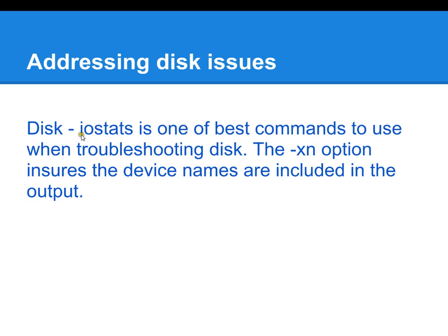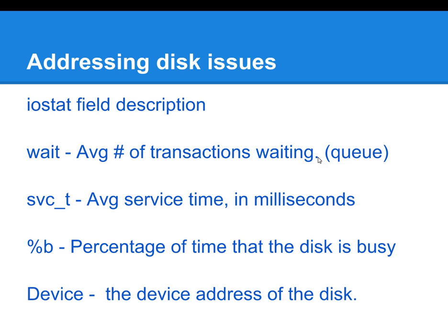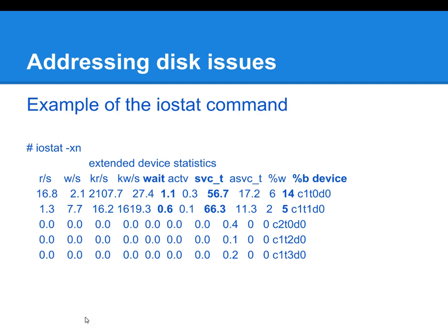Going back to iostat: iostat -xn provides valuable disk statistics. All of these are averages, but it gives you the wait time, the time it takes to service reads and writes, and the time that the disk is busy. It also gives you the disk name or disk device that these stats are coming from.